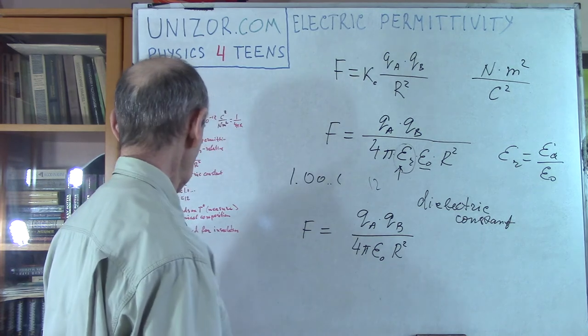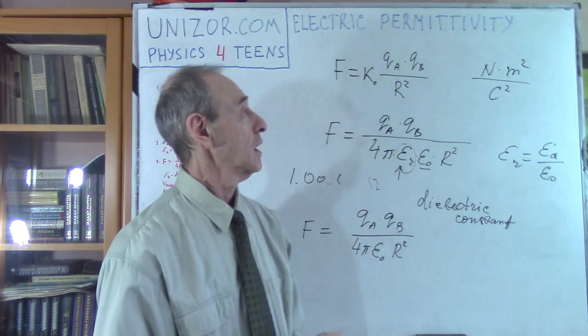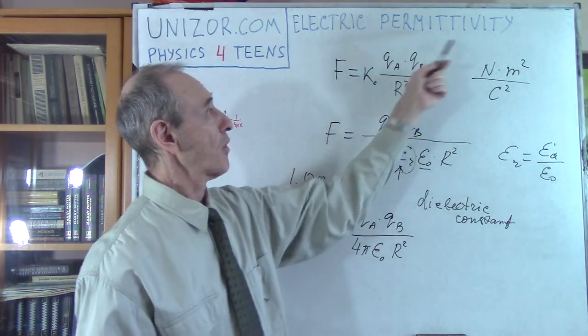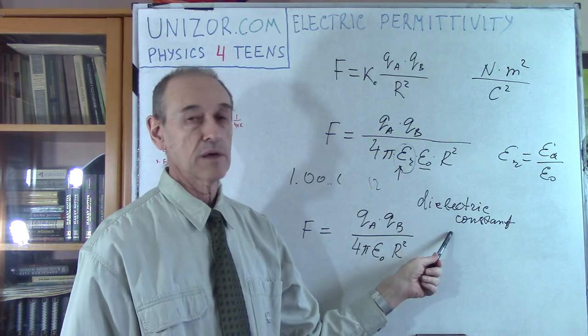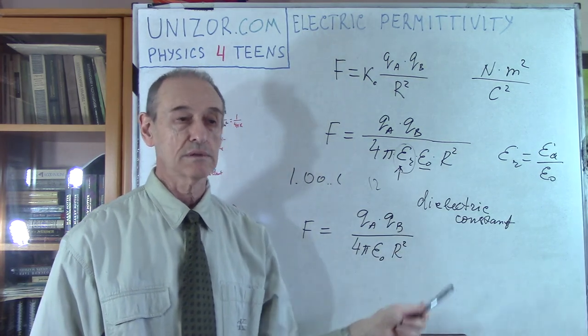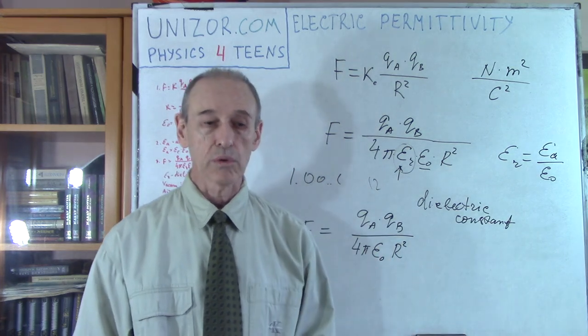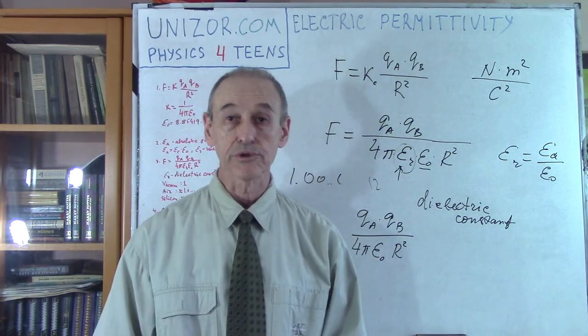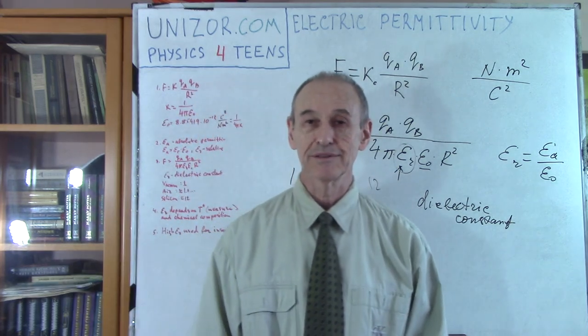And basically, that's it. That's all I wanted to talk about. Again, remember this word permittivity. So it's a relative permittivity. And another name for this is dielectric constant, which is playing a very big role in all our electrical equipment. That's it for today. Thank you very much. And good luck.